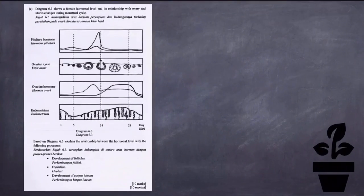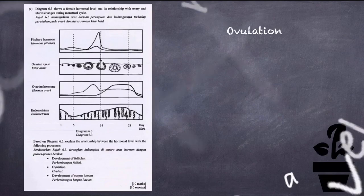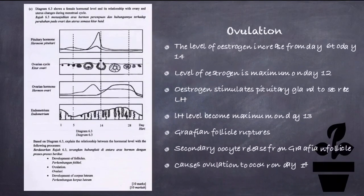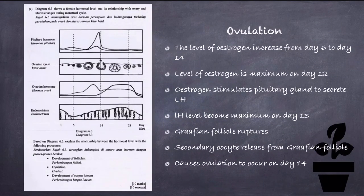For the next process, which is ovulation: the level of estrogen increases from day 6 to day 14, reaching maximum on day 12. Estrogen stimulates the pituitary gland to secrete LH. The LH level becomes maximum on day 13. The Graafian follicle ruptures and the secondary oocyte is released from the Graafian follicle, causing ovulation to occur on day 14.